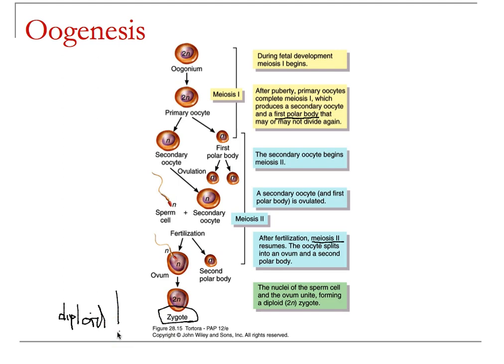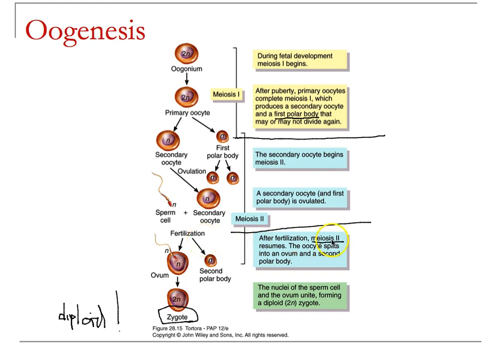Mother Nature sacrifices three-quarters of the genetic potential to give one cell all of the cytoplasm, ensuring that one will survive. There is a specific timing process here: that secondary oocyte is held inside a follicle, and if that follicle never matures, none of this would ever happen. Fertilization is only going to occur when conditions are met at the right time.